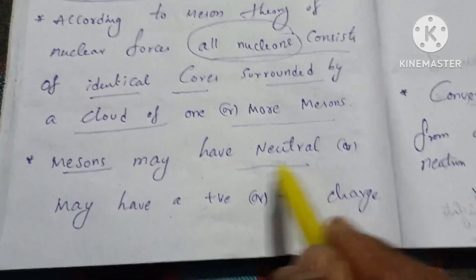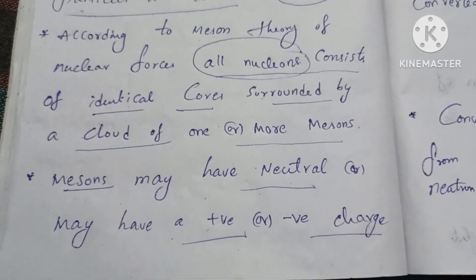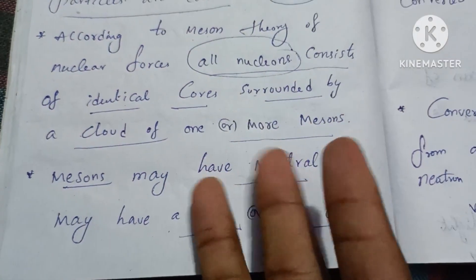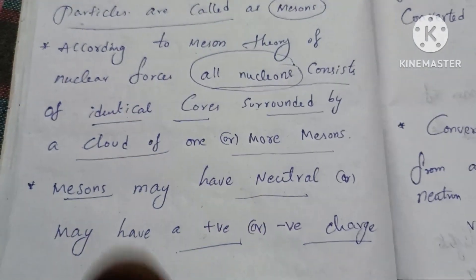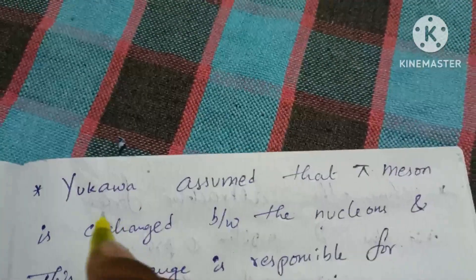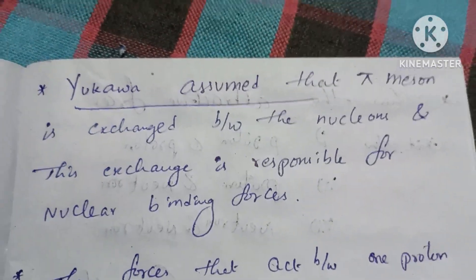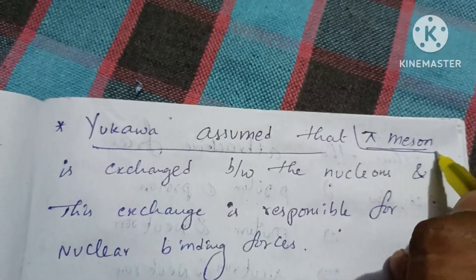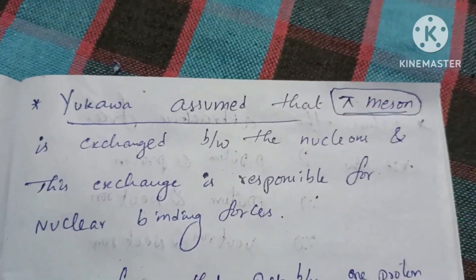Mesons may have neutral, positive, or negative charge. Yukawa assumed that the pi meson is the particle exchanged between nucleons.